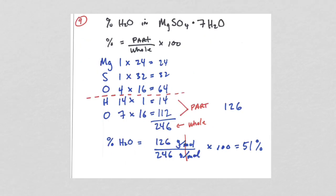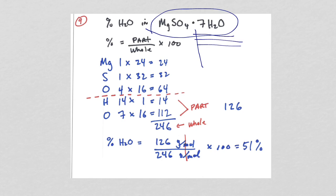For question 9, this is a hydrate. The dot in the formula does not mean multiplication — the water is physically sitting in the crystalline structure. Calculate the gram formula mass of the whole hydrate. The seven water molecules have a mass of 126 and the whole hydrate has a mass of 246. Setting up part over whole gives 51%.